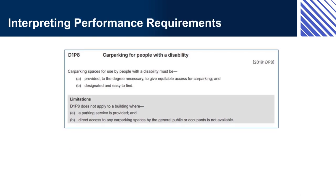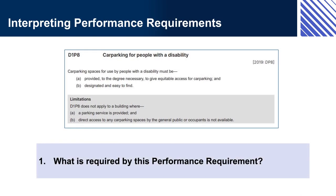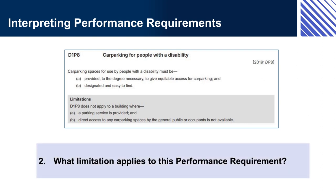Interpreting performance requirements — Question 1: What is required by this performance requirement? The performance requirement requires two different things: (1) that some disabled car parking spaces are provided, and (2) that those spaces are clearly designated so that people who are entitled to use them can find them. Question 2: What limitation applies to this performance requirement? The performance requirement is limited so that it doesn't apply when the building has a parking service such as valet parking, or when the building has no direct access to any car parking spaces for use by anyone.